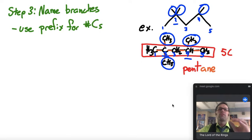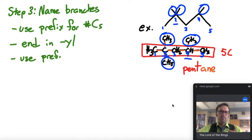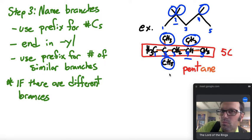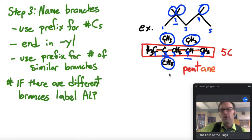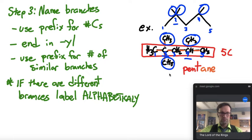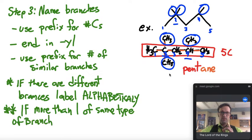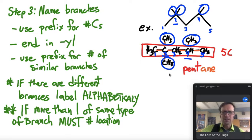So we need to name the branches. We need the same prefixes for the number of carbon for each branch. We need to end the branch names in YL. So it's going to sound like, every time we need to use prefixes for the number of similar branches, remember the numbers, the purple ones. So we have three of these one chains, so we're going to use tri. That's like a spoiler. So if there are different branches, label them alphabetically. If there are more than one of the same type of branch, then you must label each number location in the name. Now that was a lot. There's a lot of rules here and we don't have all of these in our one little example. So we have to be careful.